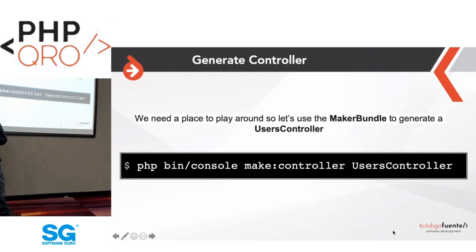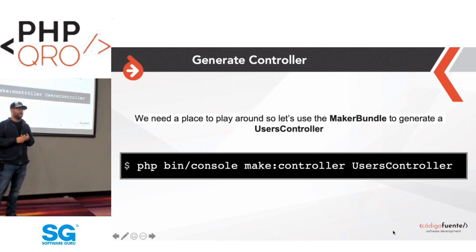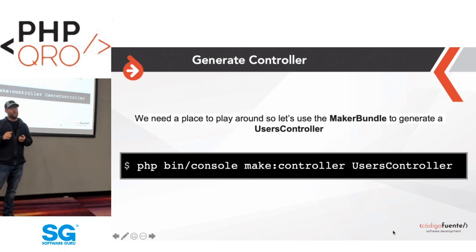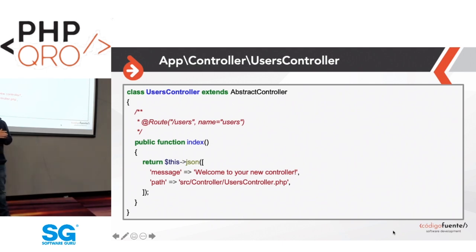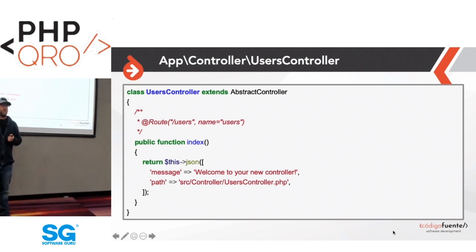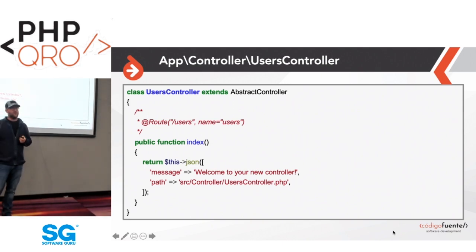Now that we have our table, we can use the make controller command to generate a blank controller and start interacting with the database table. At this point, we're not going to use the ORM — we'll keep it simple and use the database abstraction layer. I'll show how you can evolve an application from DBAL without ORM and then migrate to ORM and entities. The make controller command outputs a dummy controller where you can replace the index method with your own application code.